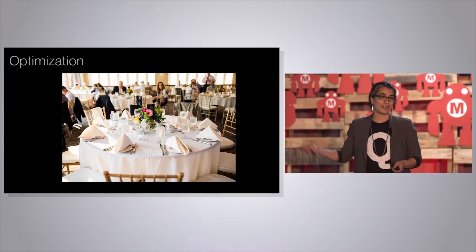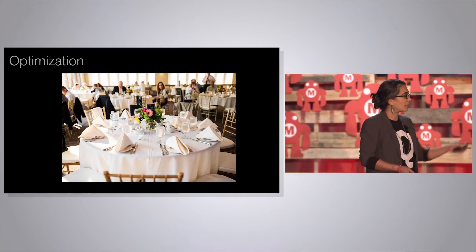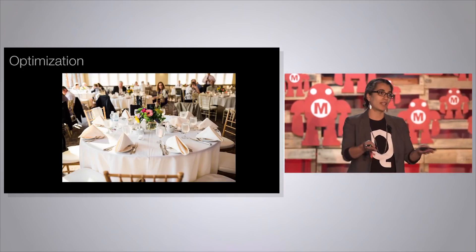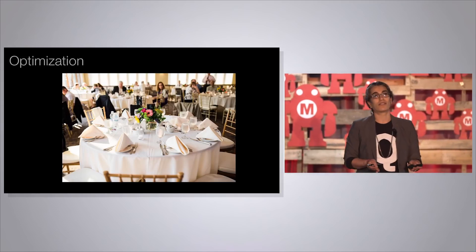Here's a picture of a table — a table at my wedding. You can see 10 people around a table. How many different ways are there to configure 10 people around a table? The answer is 10 factorial. The number 10 seems so small, but 10 factorial is 3.6 million. There are 3.6 million ways to arrange 10 people for dinner. Next time you have dinner with 10 friends, share that fun fact with them.